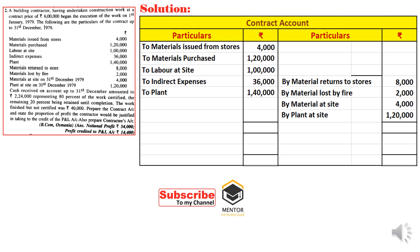Note: when opening and closing values of plant are given, take opening on debit side and closing on credit side — or alternatively, take the difference as depreciation (1,40,000 − 1,20,000 = 20,000). Also note: material lost by fire is credited in the contract account, not debited — it is not an expense for this particular contract since the material was not used. The contractor accounts for it in his overall P&L.